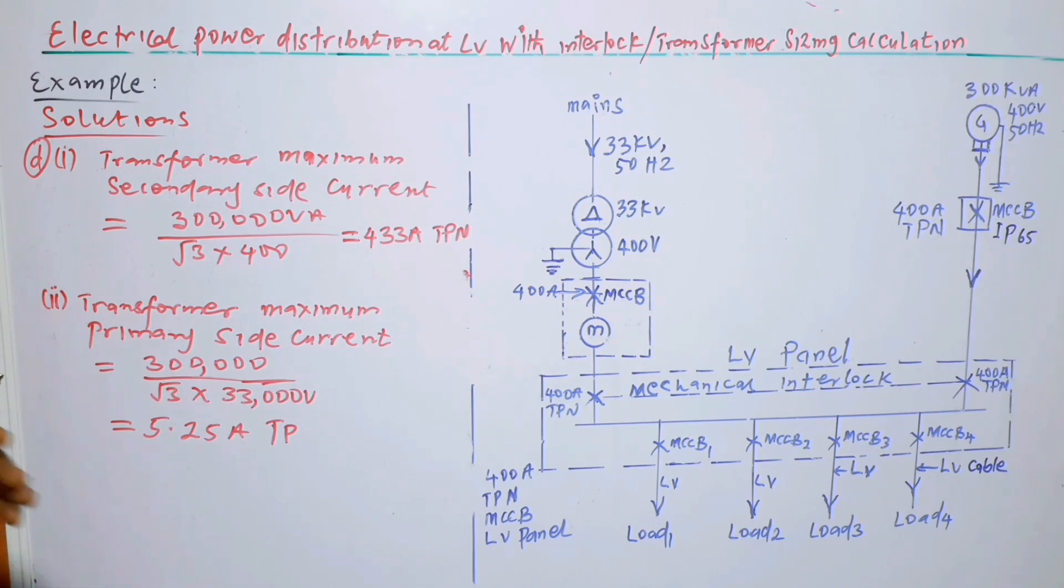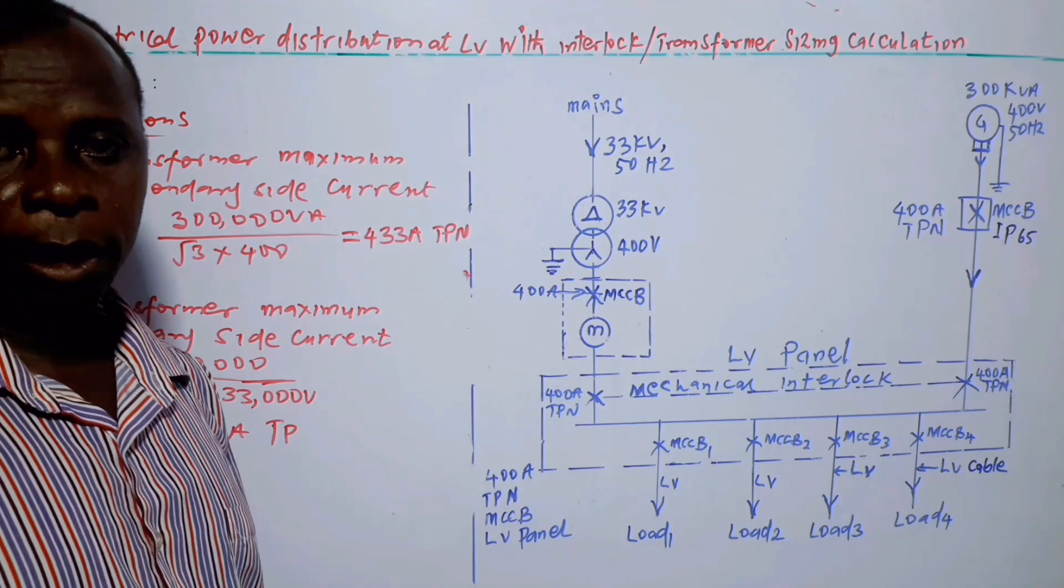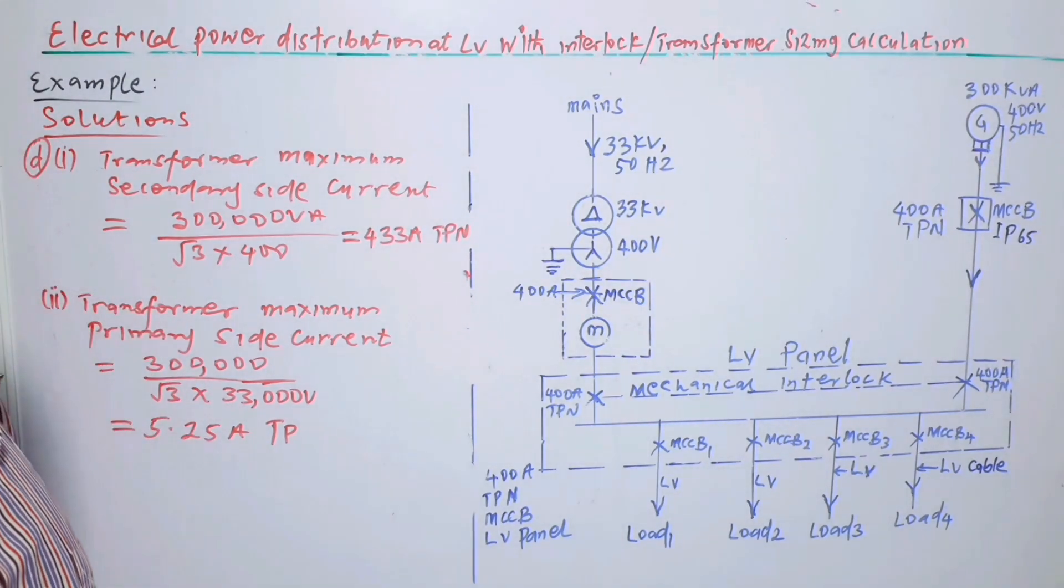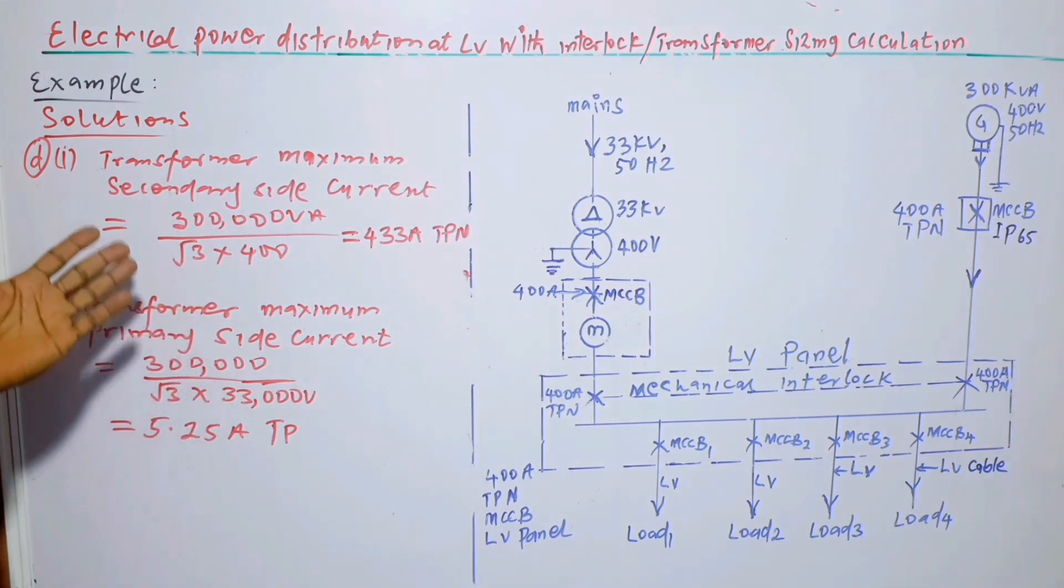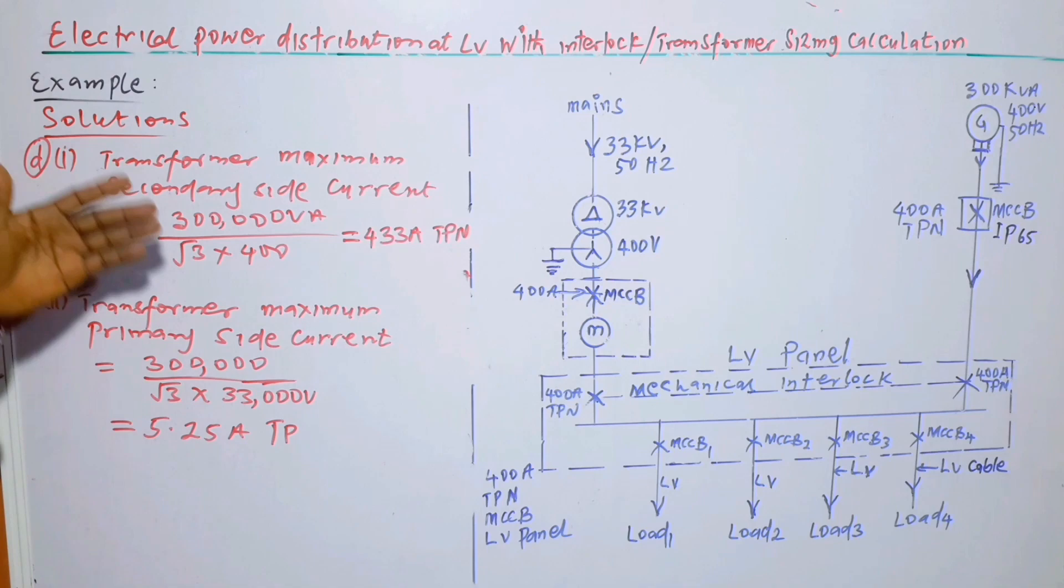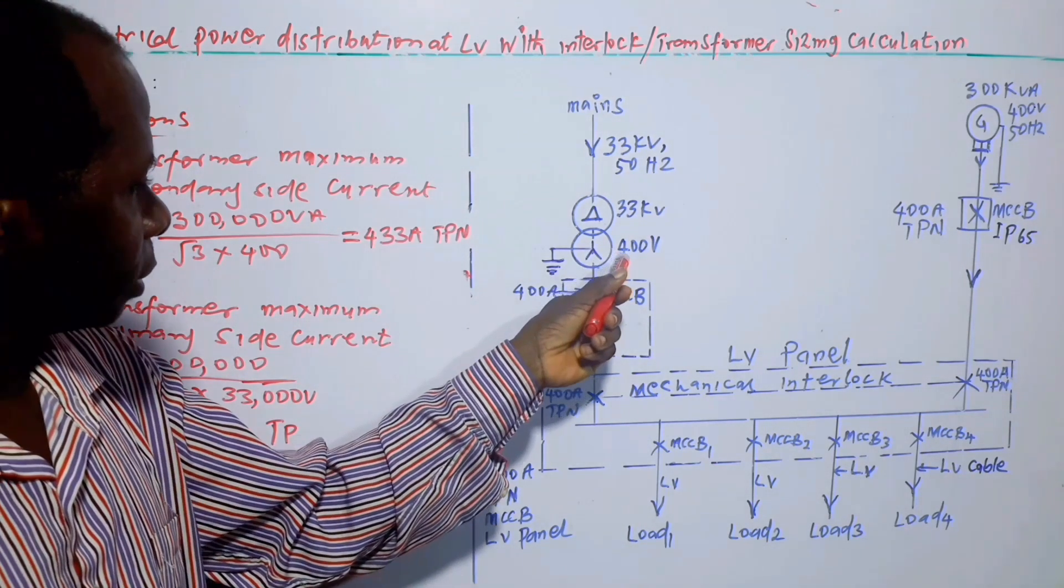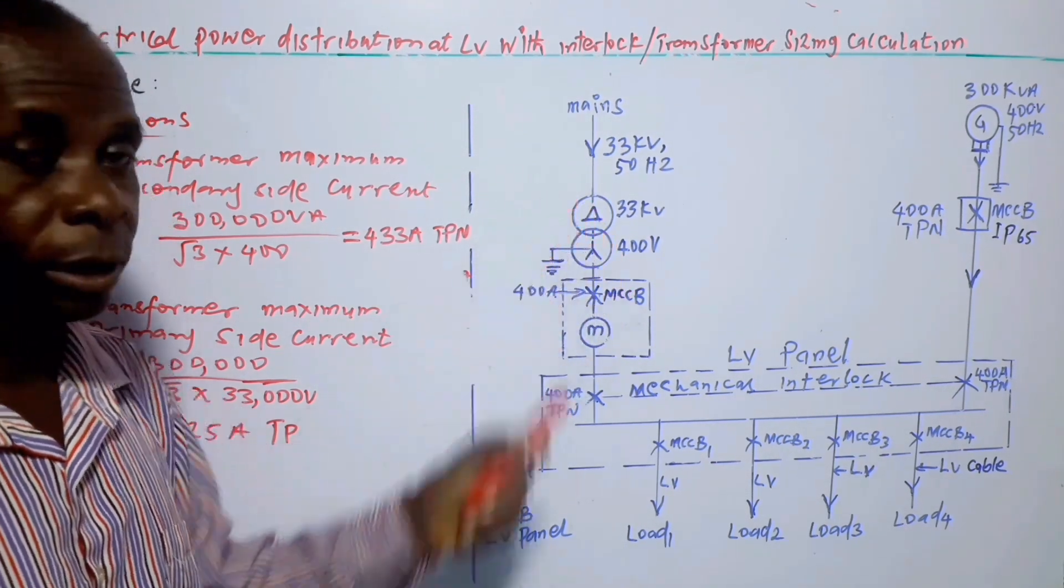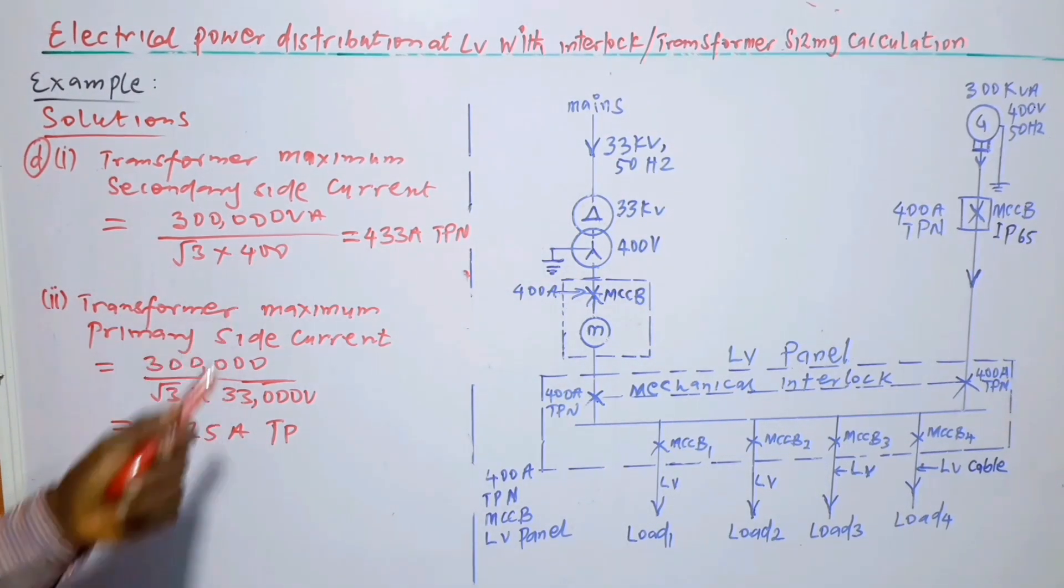So on the primary side, we are making use of the fact that we are neglecting the losses. The transformer losses are the iron losses and the copper losses. So we have the two together. They are negligible compared to the rating of the transformer, the active power of the transformer. So we move ahead. It therefore means that the power on this side is equal to the power on this side.